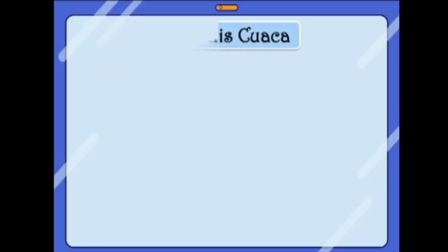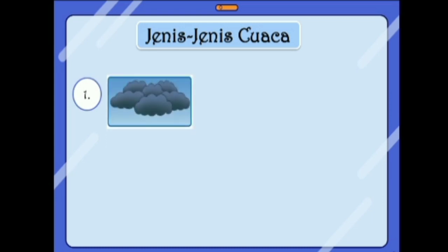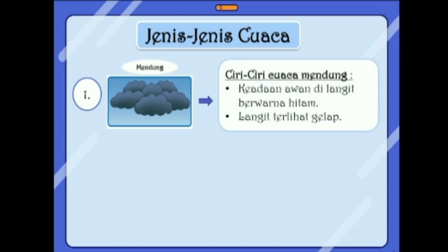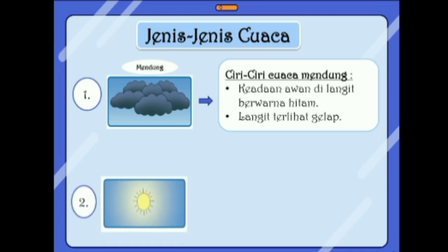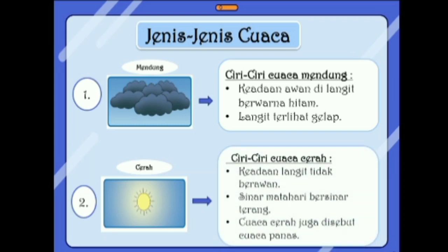Jenis-jenis cuaca. Yang pertama, perhatikan gambarnya ya teman-teman. Cuaca apa ini? Ya benar, ini cuaca mendung. Ciri-cirinya: keadaan awan di langit berwarna hitam dan langit terlihat gelap. Jenis cuaca yang kedua: ini cuaca cerah. Ciri-ciri cuaca cerah adalah keadaan langit tidak berawan, sinar matahari bersinar terang. Cuaca cerah juga disebut cuaca panas.